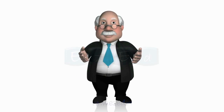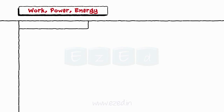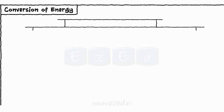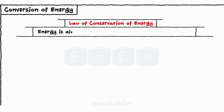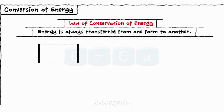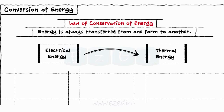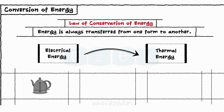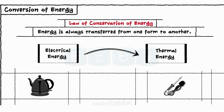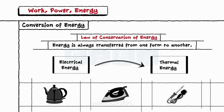Let's study the conversion of energy from one form to another. The law of conservation of energy states that energy is always transferred from one form to another. The first type is conversion of electrical energy to thermal energy. There are certain devices which convert electrical energy into thermal energy. Common examples are electrical kettle, soldering gun, electric iron, etc.